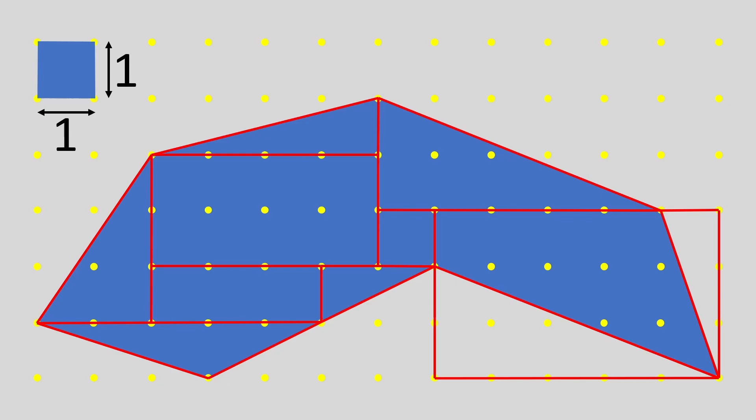We know the area of a rectangle is length times width, and when I calculate those areas, I get the following values which I'll write inside each rectangle so we can keep track of the total area.